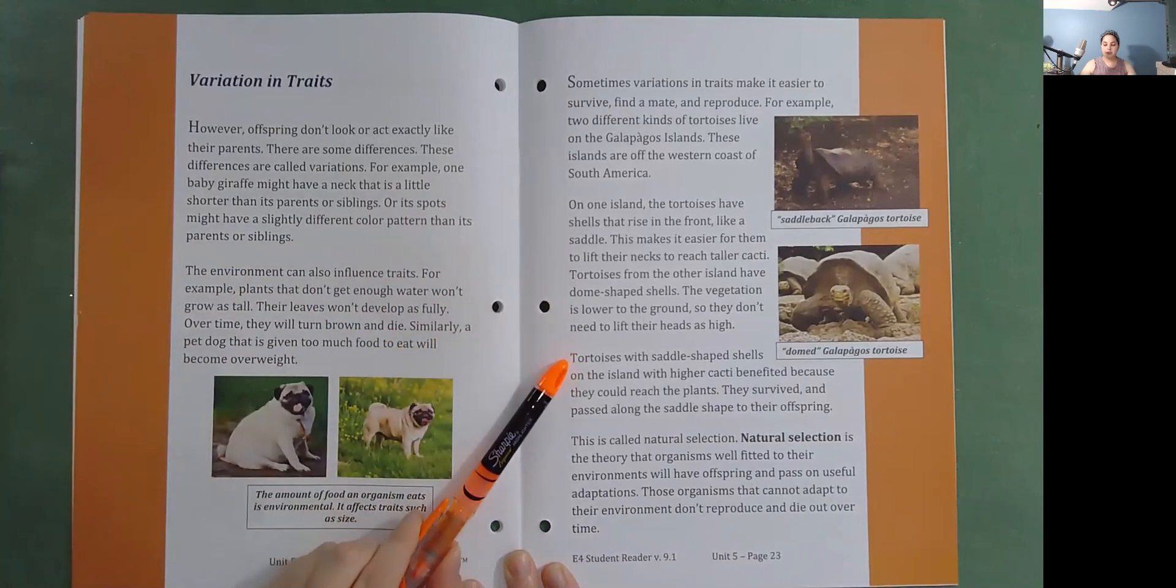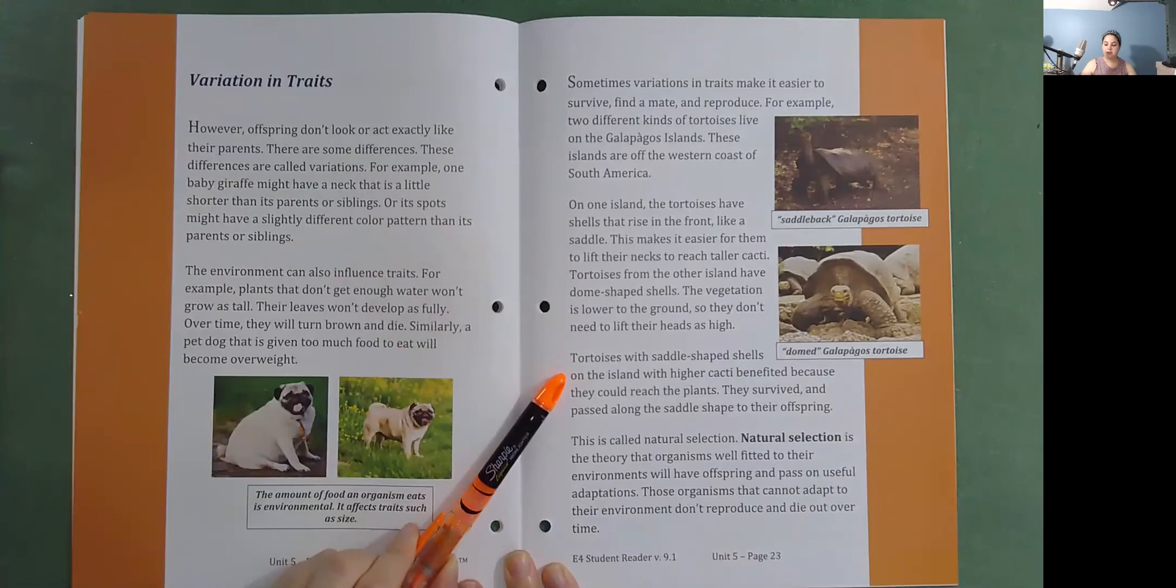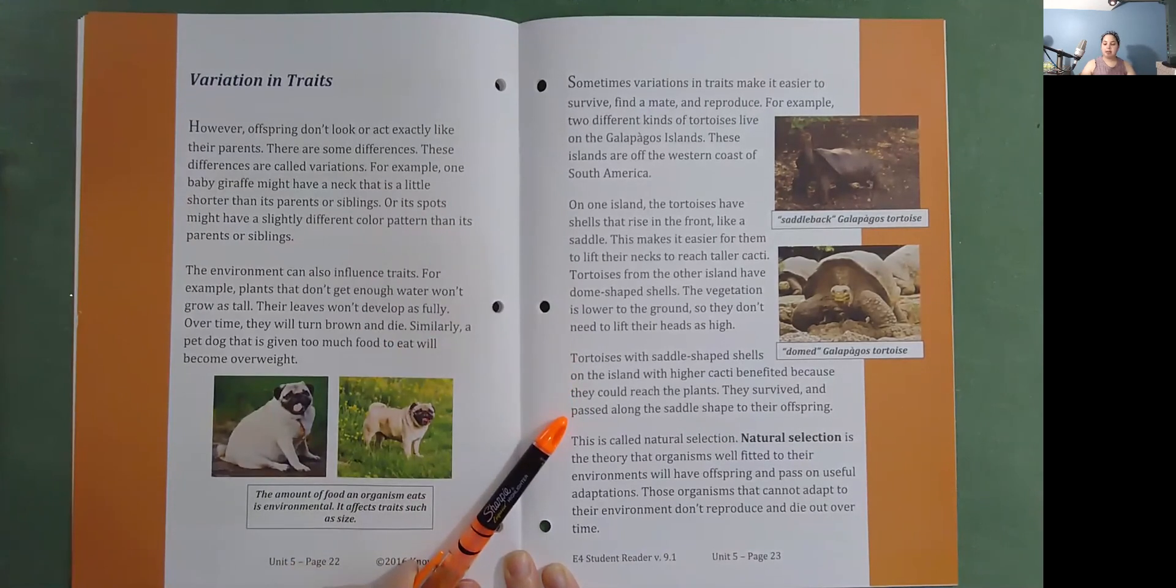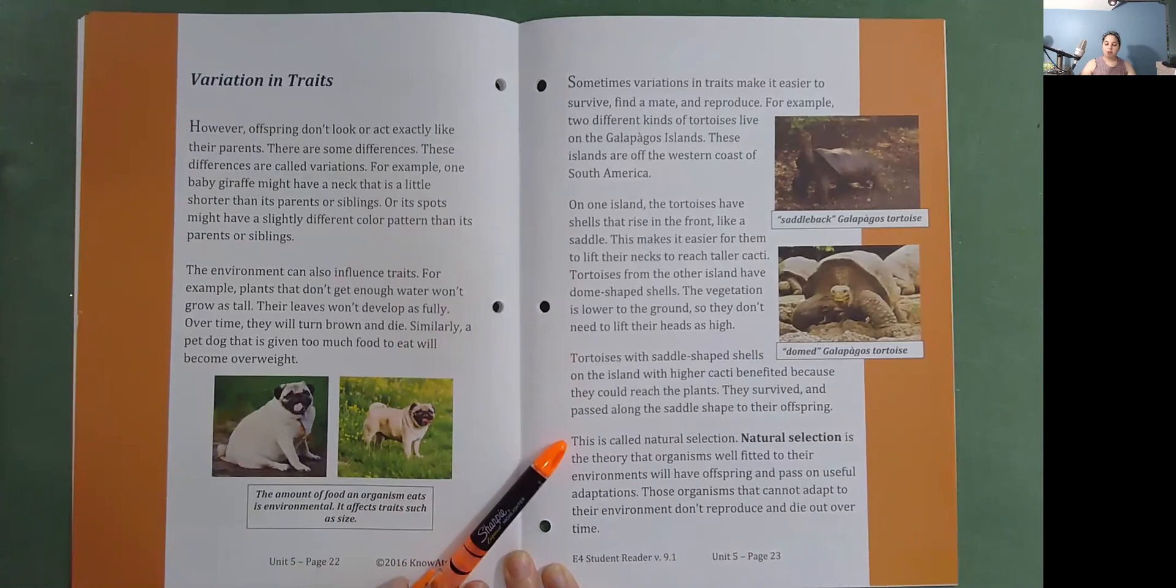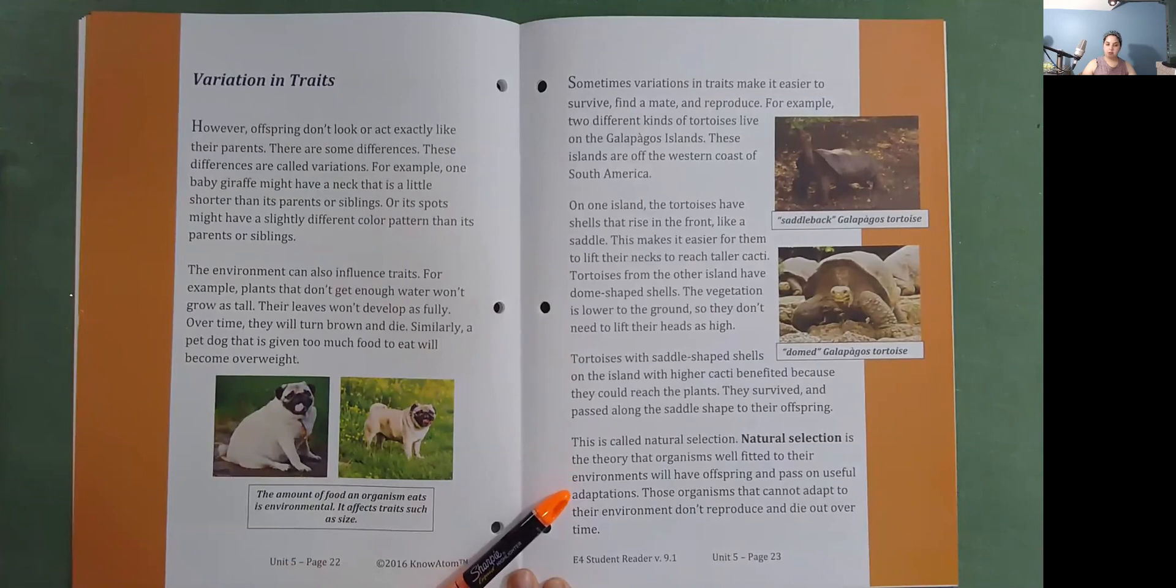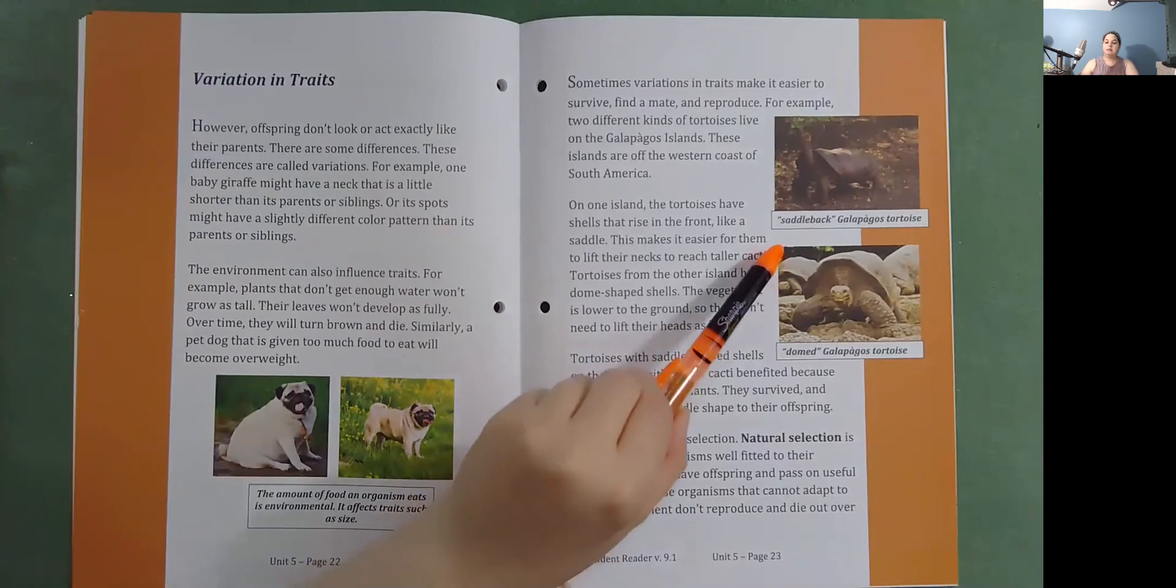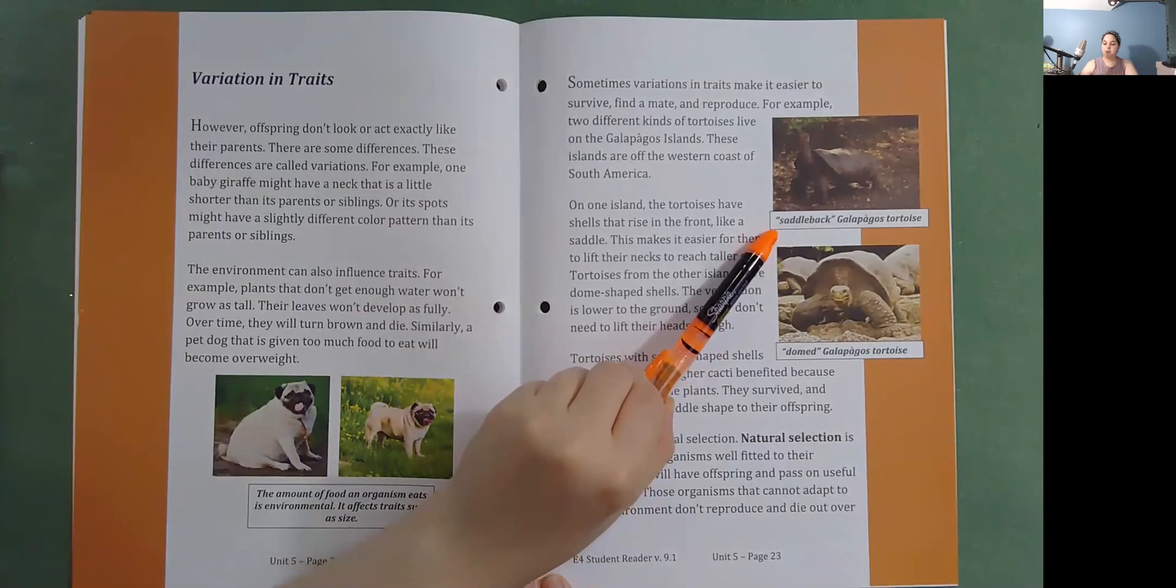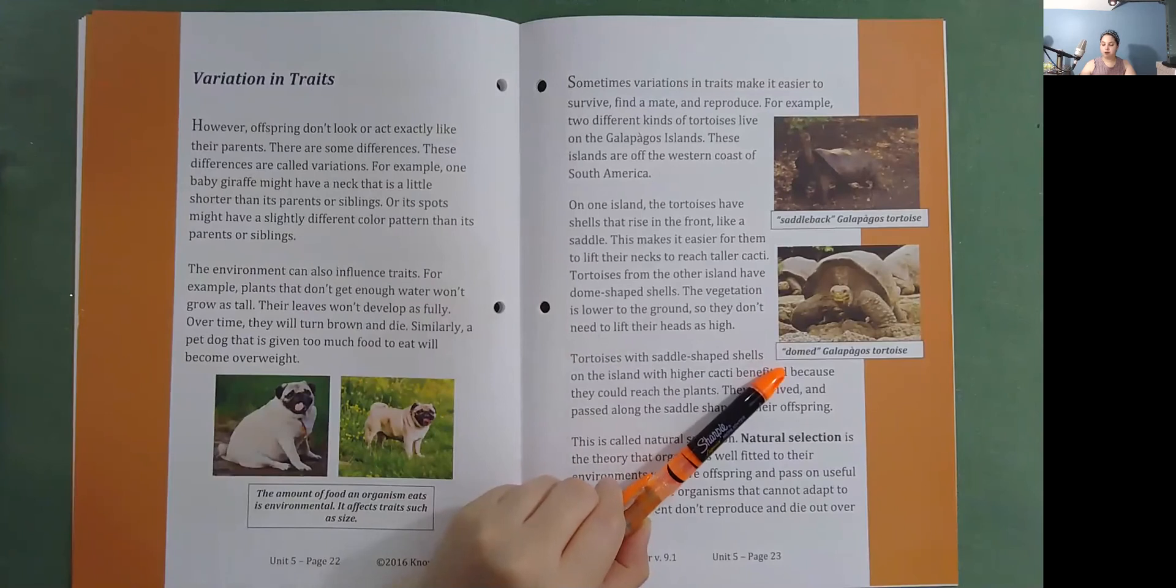Tortoises with saddle-shaped shells on the island with higher cacti benefited because they could reach the plants. They survived and passed along the saddle shape to their offspring. This is called natural selection. Natural selection is the theory that organisms well fitted to their environments will have offspring and pass on useful adaptations. Those organisms that cannot adapt to their environment don't reproduce and die out over time. This is a picture of a saddleback Galapagos tortoise and a domed Galapagos tortoise.